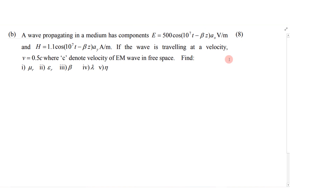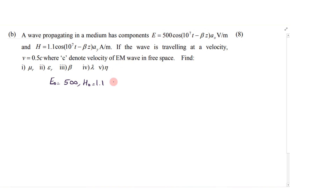In this problem, electric field and magnetic field intensities E and H are given. E0 is given as 500 and H0, the amplitude of H, is given as 1.1. Both are in phase — omega t minus beta — so there is no phase shift between E and H. We can say that angle theta of eta will be 0, and modulus of eta will be a real number equal to modulus of eta.